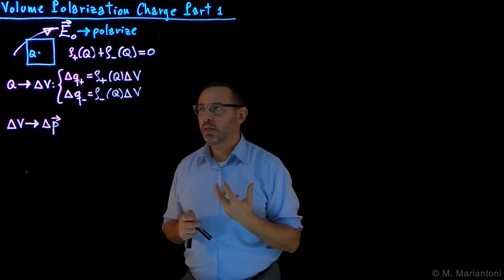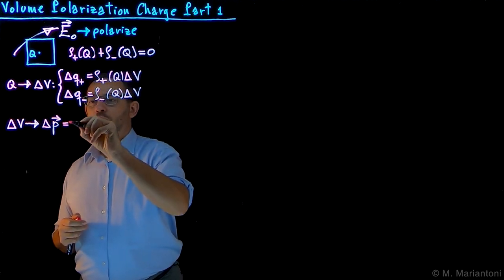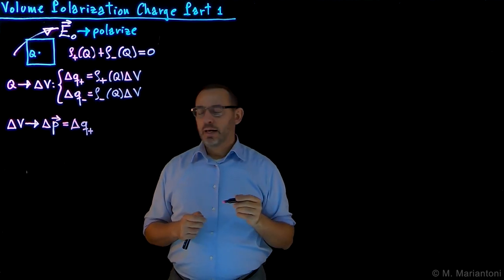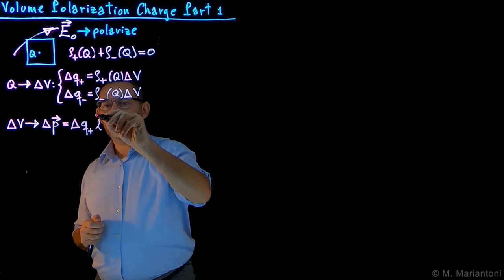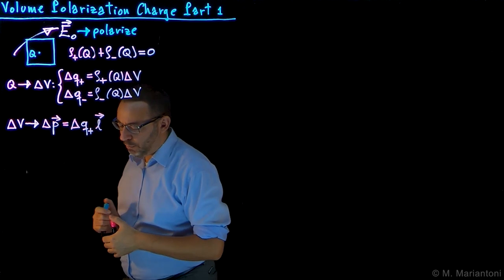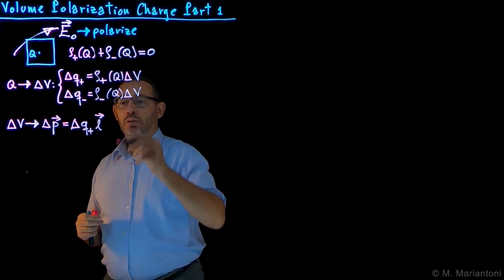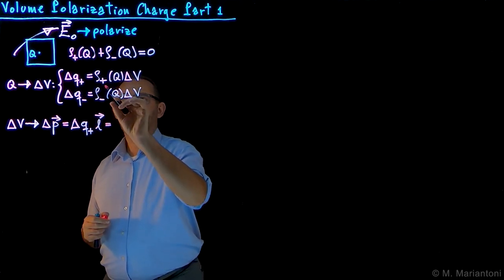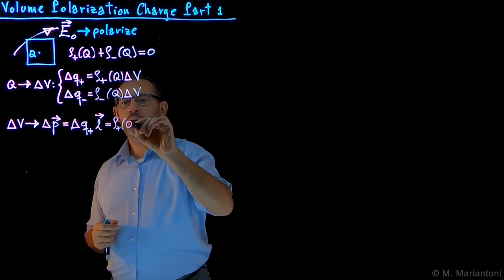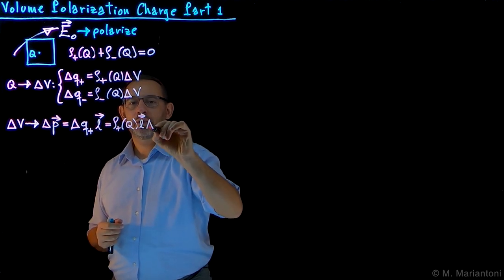We can use the simple definition of electric dipole moment, which is given by the positive charge — in this case delta Q_plus — times L-vector, where L-vector is the distance between the positive and negative charges oriented from the negative to the positive charge. So delta Q_plus is rho_plus times delta V, and this quantity is rho_plus at point Q times L-vector times delta V.